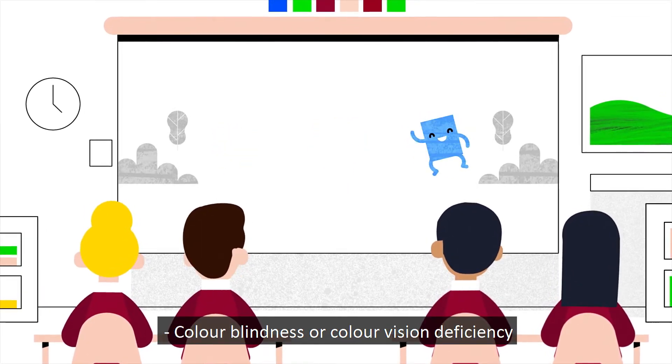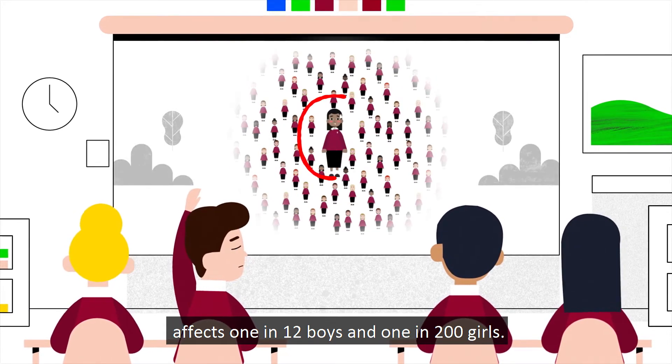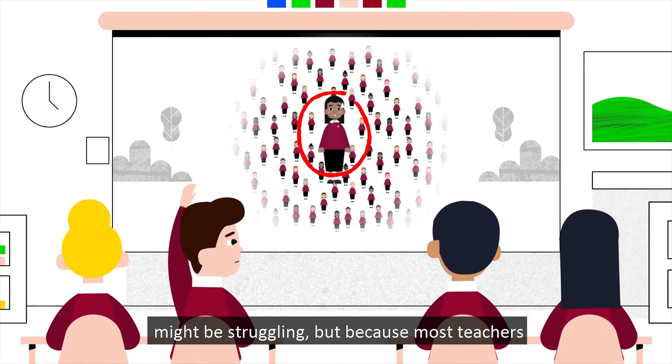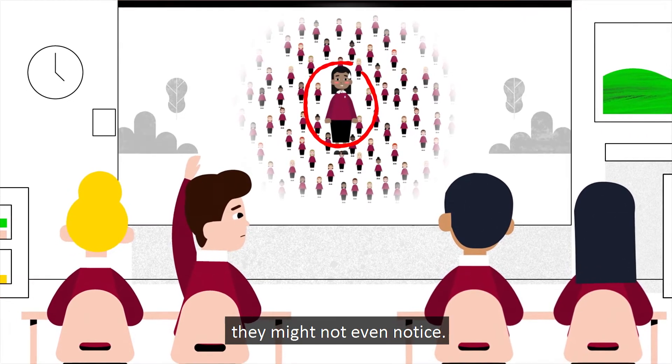Colour blindness or colour vision deficiency affects 1 in 12 boys and 1 in 200 girls. This means one in every classroom might be struggling. But because most teachers aren't trained about colour blindness, they might not even notice.